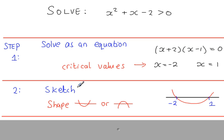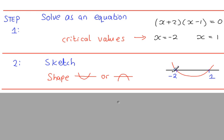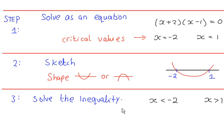Step 2: do a sketch. You'll know from the coefficient of x squared whether you have a u-shaped or an n-shaped curve. There's no need to draw in the y-axis. Make sure you've marked your critical values, and since it's a number line, make sure the values are in the correct order — for instance, don't put 1 to the left of minus 2. Step 3: solve the inequality.